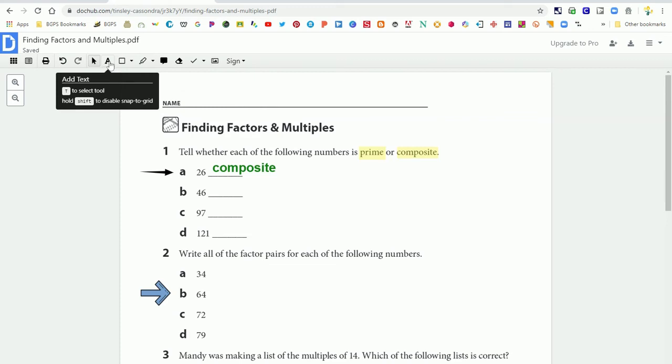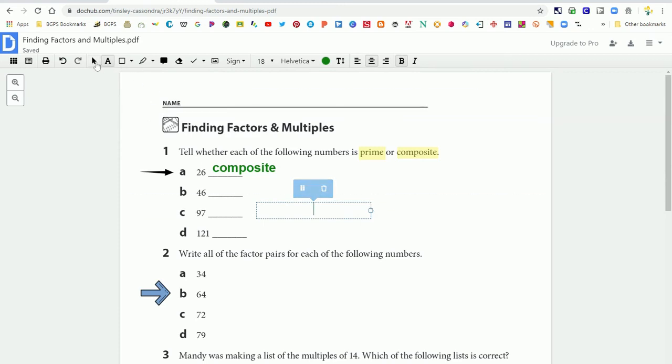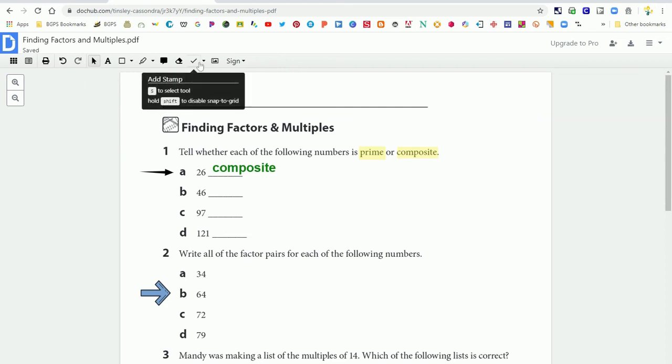So again when you share DocHub with your students the text box and the stamp and highlight are probably the features that you will want to share most with your students. How to use those and then how to download and save to your drive and or to Google Classroom.